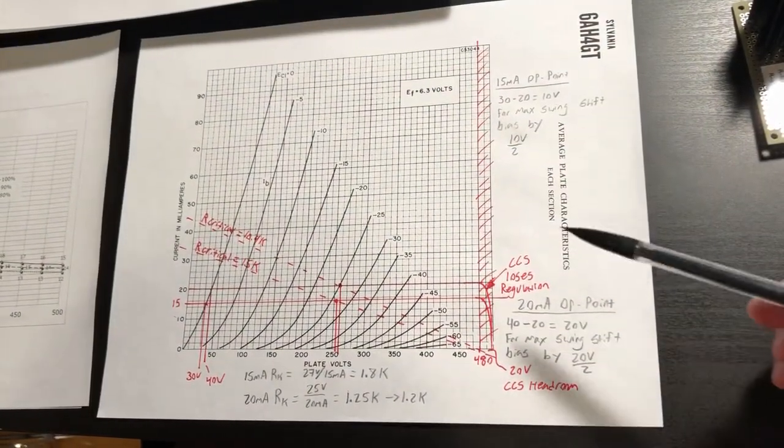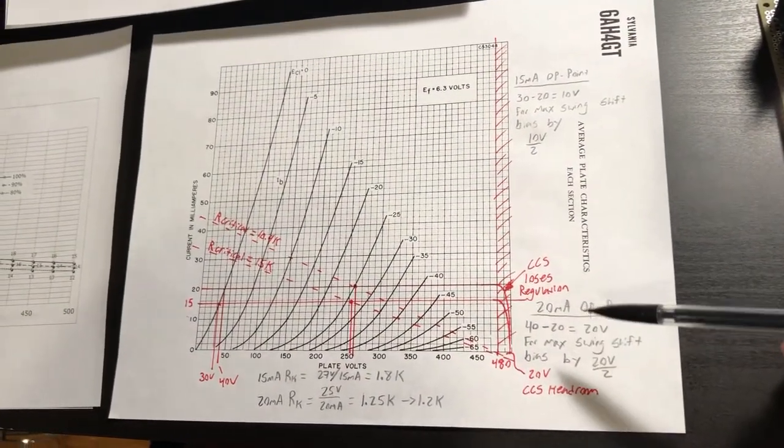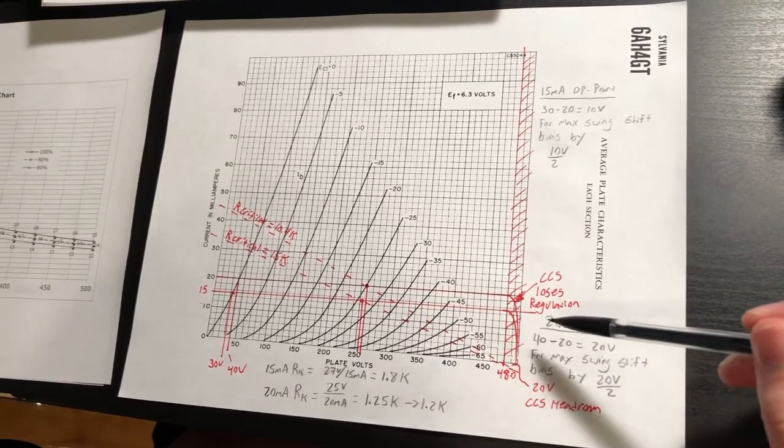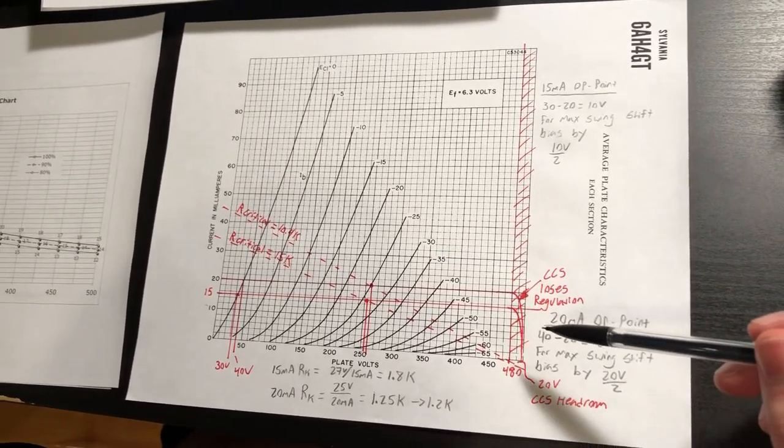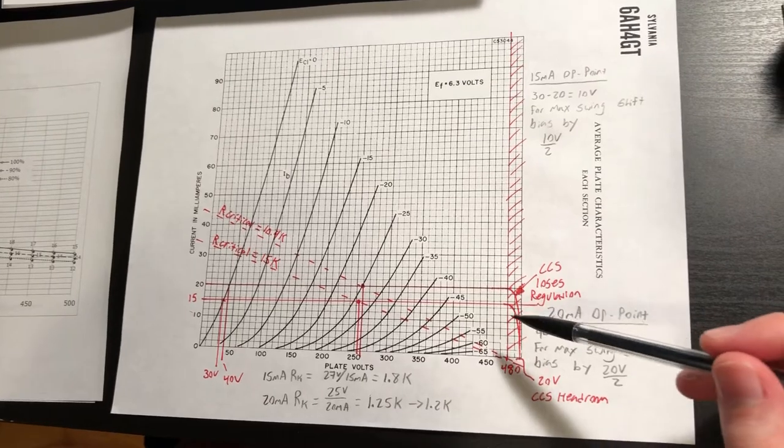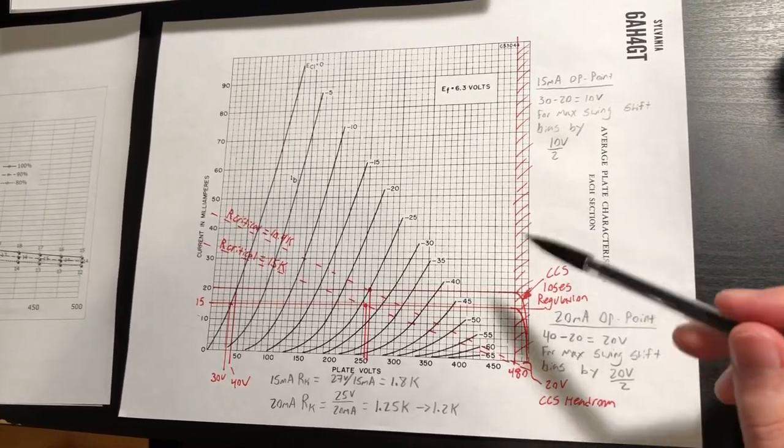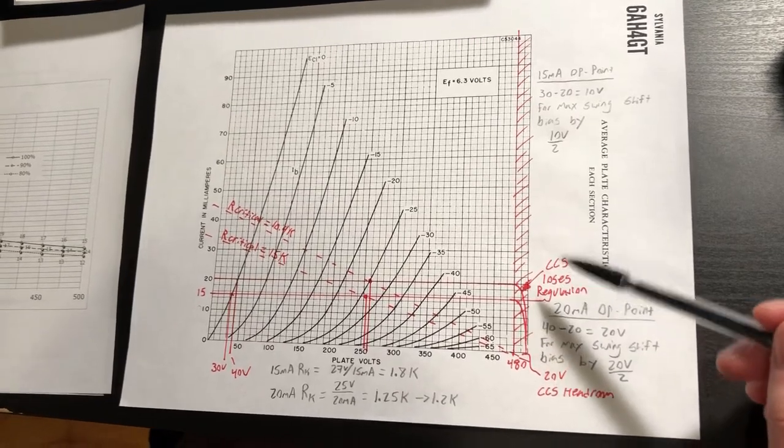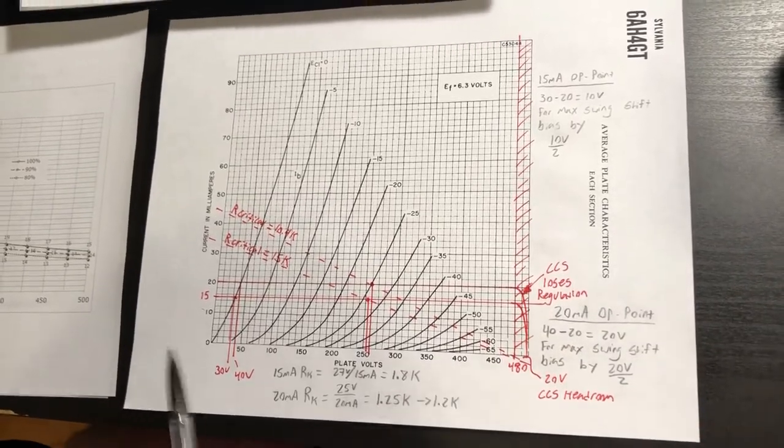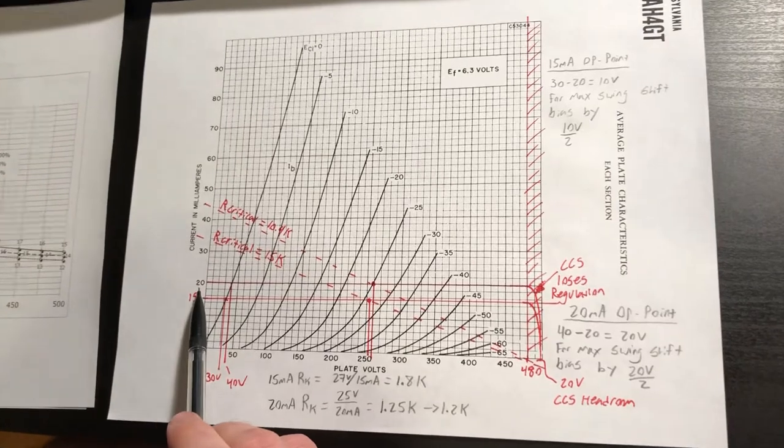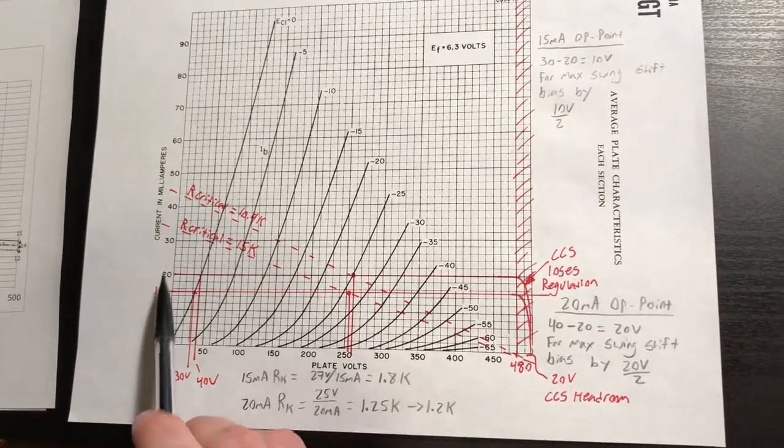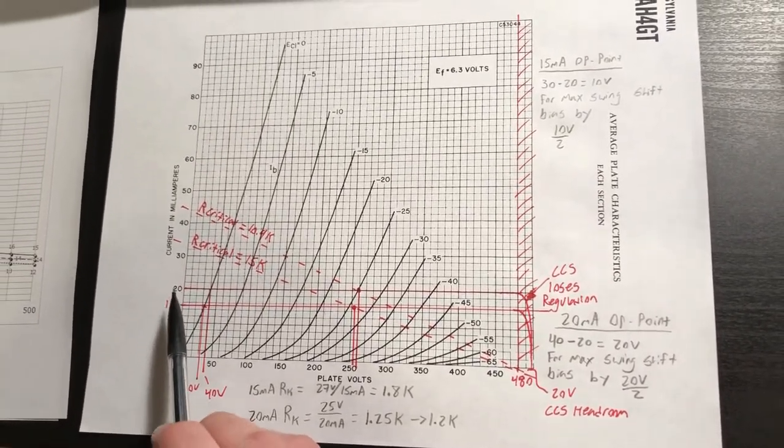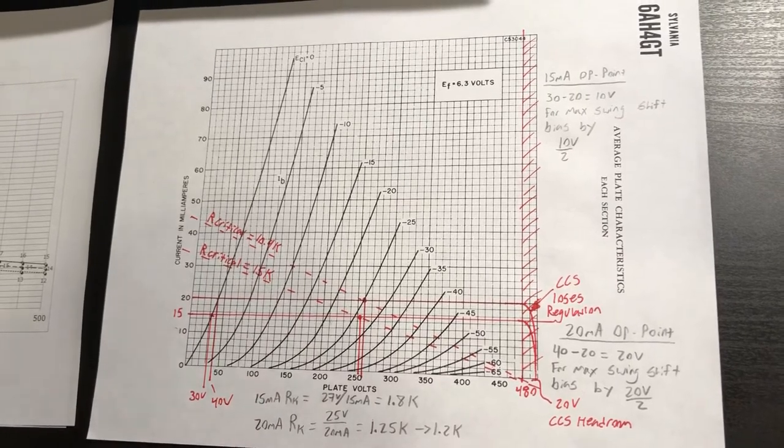Before we move to the prototype chassis, there is one other thing I wanted to show, and that is how I was just figuring out the operating point for a maximum voltage swing. So I've already identified that I want to try operating our constant current source for our second gain stage at two levels, 15 milliamps and 20 milliamps.